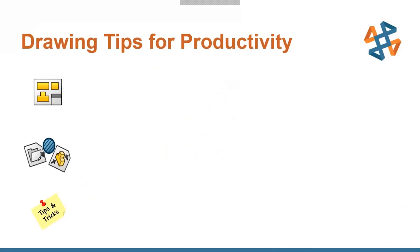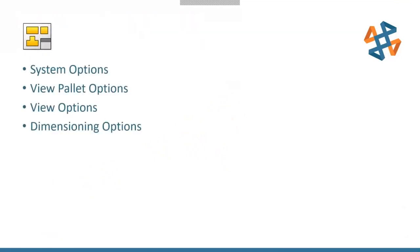Let's start off with creating a drawing. Everyone here creates drawings and knows how to do that, but I want to look at some of those tools. A lot of people may have seen these, but hopefully everyone can pick up a few things. We have system options we can set, different view options, and then once we get into annotating and dimensioning, some things we can do with dimensions.